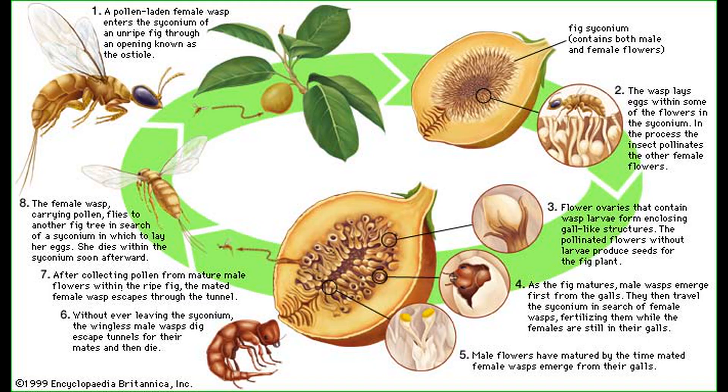But no inflorescence is as modified as those of figs. Their flowers grow on the inside surface of a hollow receptacle with one tiny opening at the anterior end. This structure is the result of a complex co-evolutionary relationship with a specific group of pollinating wasps.